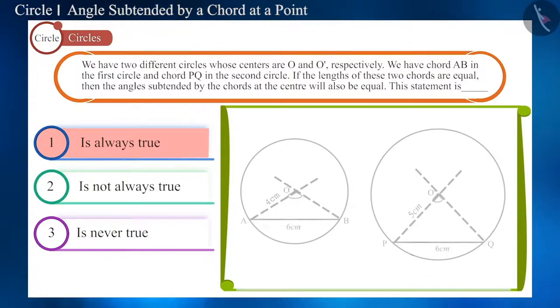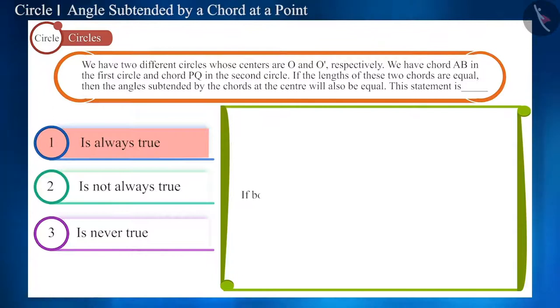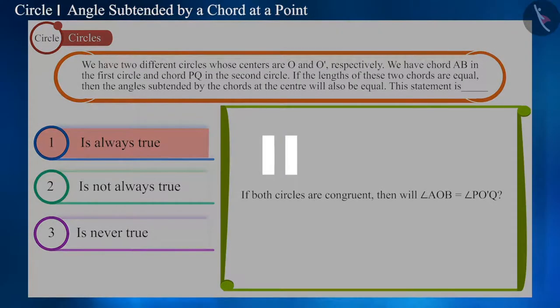In the second situation, when both circles are congruent, i.e., when the radii of both are equal, then will both these angles also be equal? You can pause the video to think about the answer.